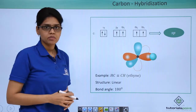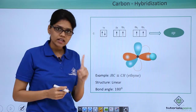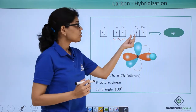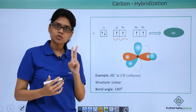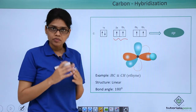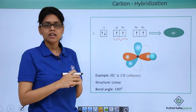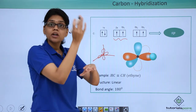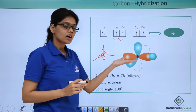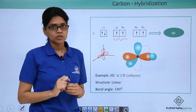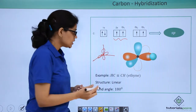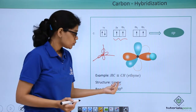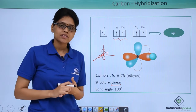Our next hybrid state is sp hybridization, which means 1 s orbital mixes with 1 p orbital. The remaining 2 p orbitals are not involved in hybridization and lie as far away from each other as possible — perpendicular to each other along x and y coordinates. The overlap takes place linearly, giving a linear structure. A typical example is acetylene — HC triple bond CH, which is ethyne. The bond angle in a linear molecule is 180 degrees.